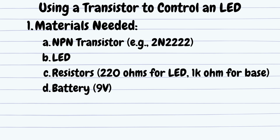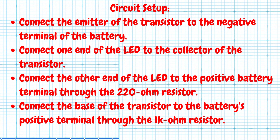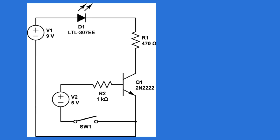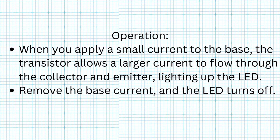Example: using a transistor to control an LED. Materials needed: NPN transistor (e.g., 2N2222), LED, resistors — 220 ohms for the LED and 1 kilohm for the base — and a 9-volt battery. Circuit setup: connect the emitter of the transistor to the negative terminal of the battery; connect one end of the LED to the collector; connect the other end of the LED to the positive battery terminal through the 220 ohm resistor; connect the base to the positive terminal through the 1 kilohm resistor. Operation: when you apply a small current to the base, the transistor allows a larger current to flow through the collector and emitter, lighting up the LED. Remove the base current and the LED turns off.